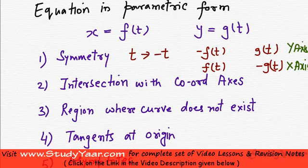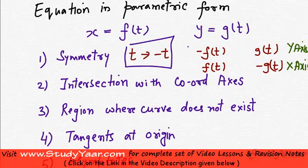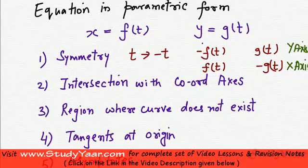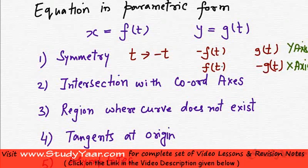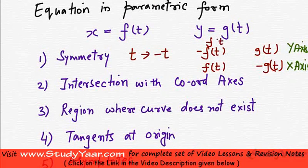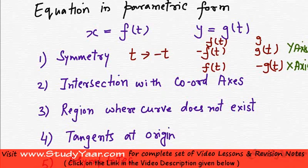Another scenario is if both of these guys remain as it is, if I change t to minus t, then I have symmetry in opposite quadrants. So another scenario would be if f(t) remains as it is and g(t) remains as it is, then I have symmetry in opposite quadrants.